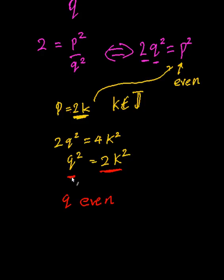Right, so if Q squared is equal to 2 times an integer squared, that must mean that Q itself is an even number. But hang on, P and Q both are even.